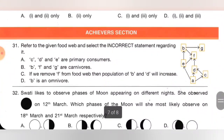Achiever section. Question 31: refer to the given food web and select the incorrect statement regarding it. Option A: C, D and E are primary consumers. B: F and G are carnivores. C: if we remove F from the food web, then population of B and D will increase. D: B is an omnivore. For this question, I am not sure about the answer, so we will wait till SOF releases its answer key.